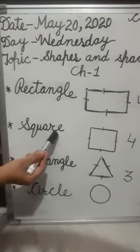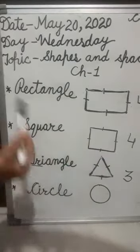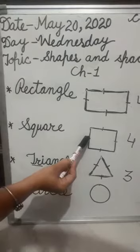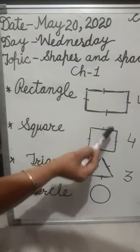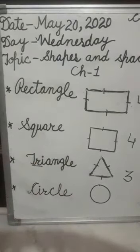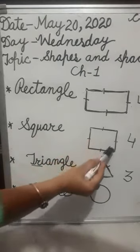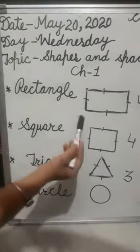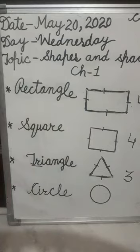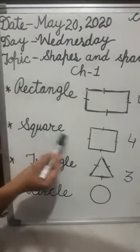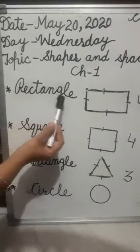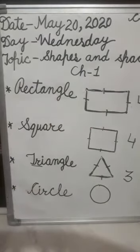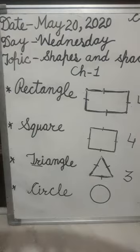Number two: Square shape. This is a square shape. It has four sides and four corners — इसके भी four sides होती हैं और four corners होती हैं. But all sides are equal in square shape — square shape में all sides are equal, सारी sides equal होती हैं. Rectangle और square में यही difference होता है: in square shape all sides are equal, in rectangle shape the opposite sides are equal. यह ध्यान रखना है — इसी चीज़ से हमें पता चलता है कि rectangle क्या है और square क्या होता है.